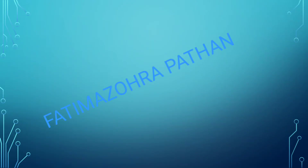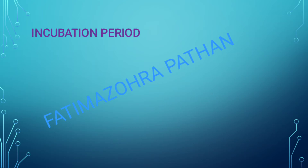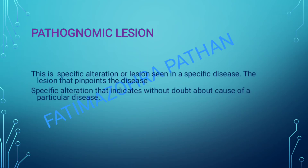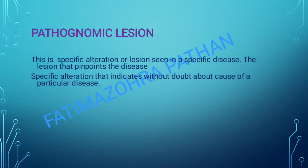Hello guys, general pathology mein next topic start karte hai. Humne last mein pathogenesis ke baare mein discuss kiya tha. Ab next one hai pathognomonic lesion. What is pathognomonic lesion? This is a special alteration or lesion seen in a specific disease — the lesion that pinpoints the disease. It is a special feature of the disease that we can recognize.